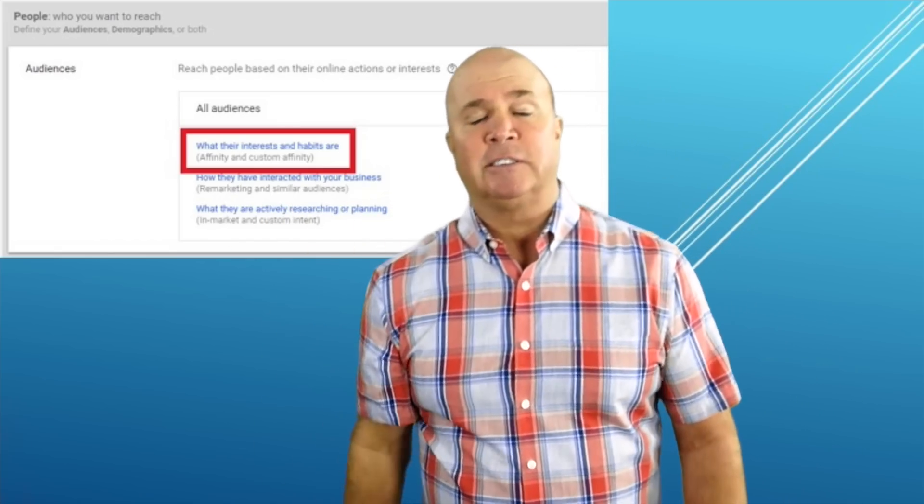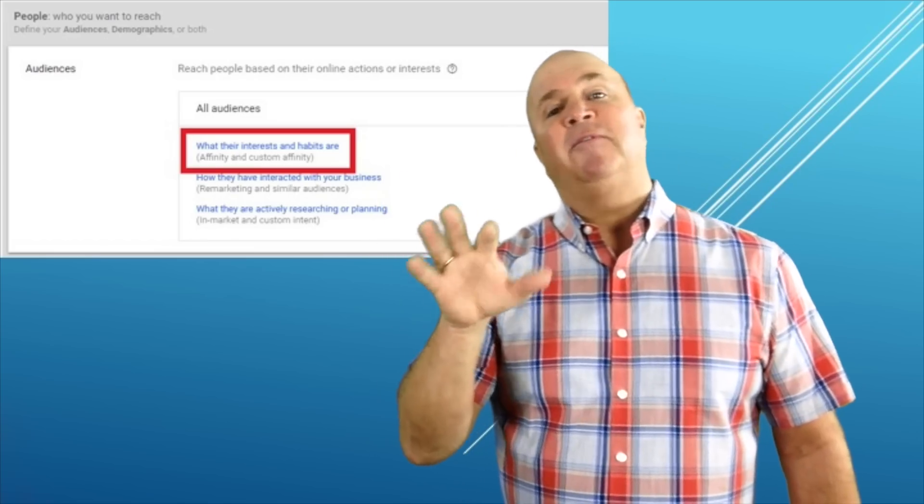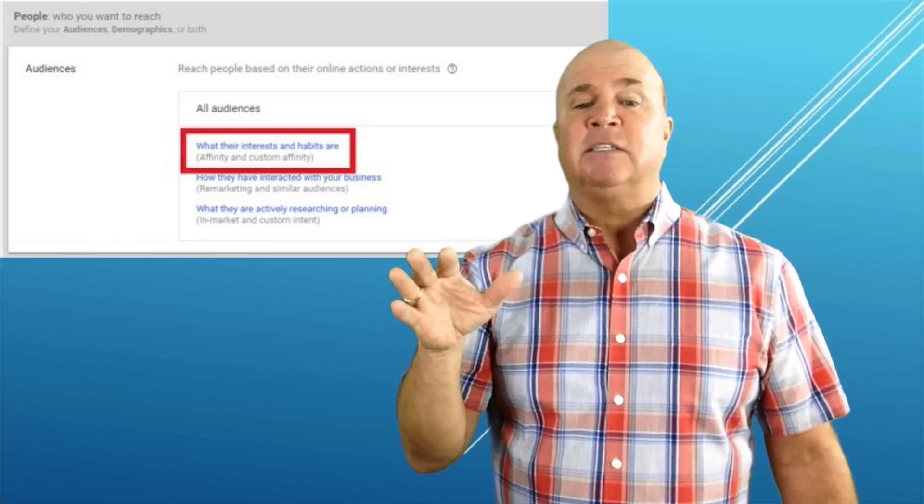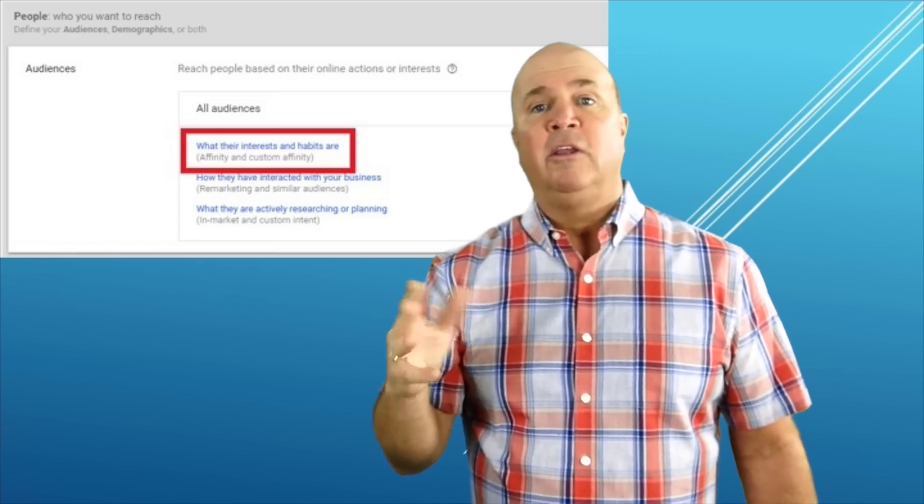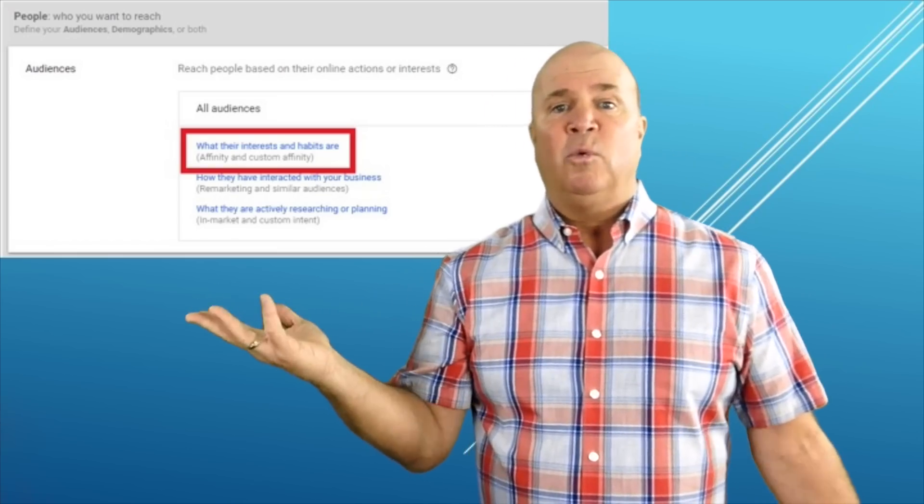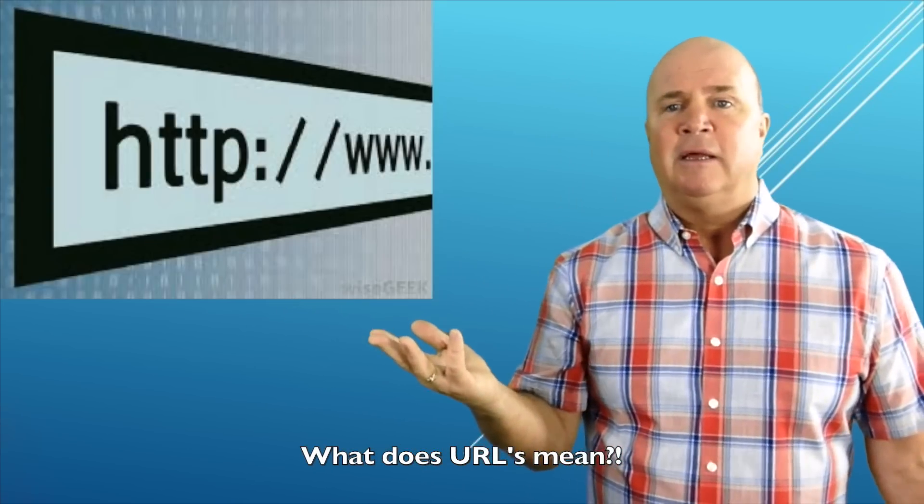So under custom affinity audiences it says find your audiences' relevant interests or URLs. So what does URLs mean? If you click on URLs it says website addresses your ideal customer might visit.